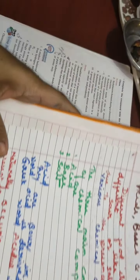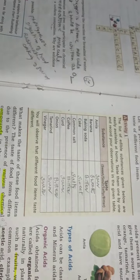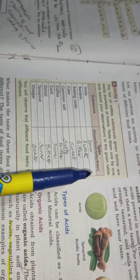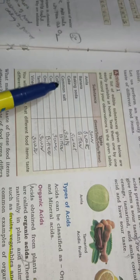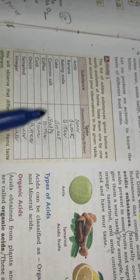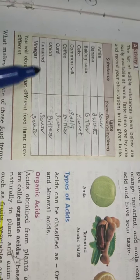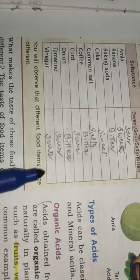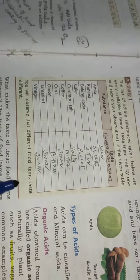So we have an activity. Activity 1: the list of edible substances given below are easily available at home. Taste them one by one and record your observation in the given table. Banana is sweet, baking soda is bitter, cake is sweet, common salt is salty, coffee is bitter because it is base, curd is sour, onion is bitter, tamarind and Emily are sour, vinegar is sour. You will observe that different food items taste different.